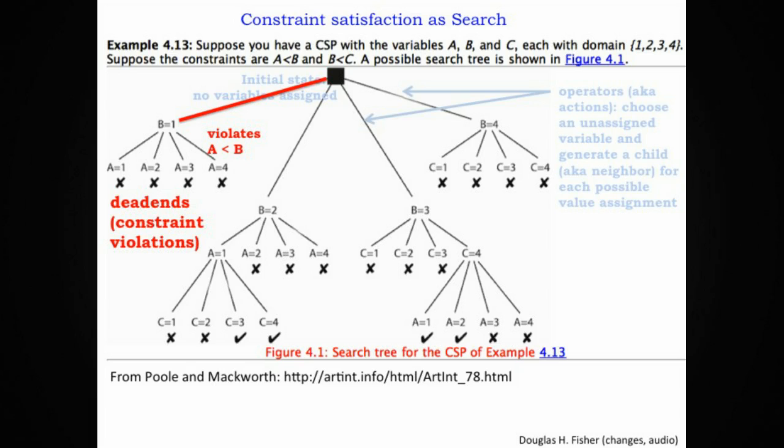So we begin at the start. At the left, you'll see B equals 1. That represents one child of the start state. And we follow that up with a choice of assignment of A. It turns out that all the children of the B equal 1 node at the left violate the constraint that A is less than B. They're all dead ends. Likewise, another dead end is if we were to choose B equals 3 off to the right, and then we were to choose C equals 1, that state, this is towards the center of the graph, that state would violate the constraint B is less than C. B equals 3, C equals 1, the constraint is violated.